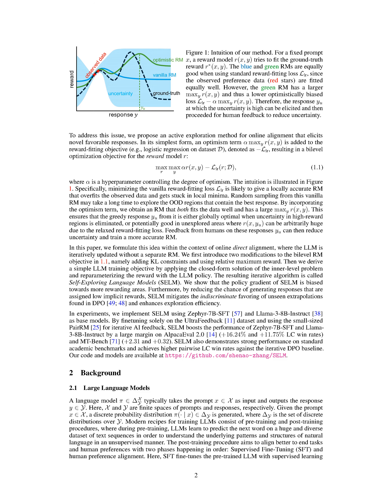In this section, we introduced the concept of LLMs and their alignment methods, particularly reinforcement learning from human feedback, RLHF, which aims to improve LLMs by maximizing reward functions learned from human-labeled prompt-response data. We propose an active exploration method within online alignment to elicit novel responses by incorporating an optimism term into the reward-fitting objective, leading to a more accurate reward model that explores high-reward regions efficiently. This approach, known as self-exploring language models, SELM, enhances LLM training by biasing policy gradients towards rewarding areas and improving performance on various benchmarks.